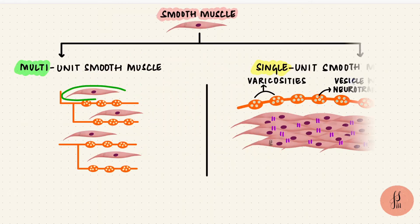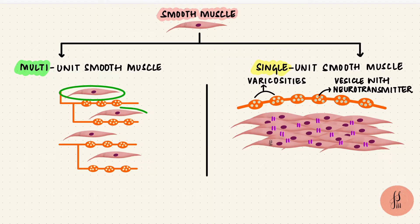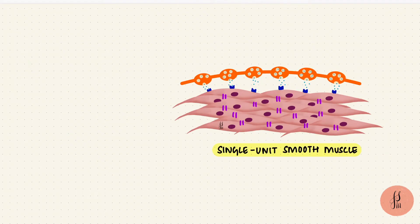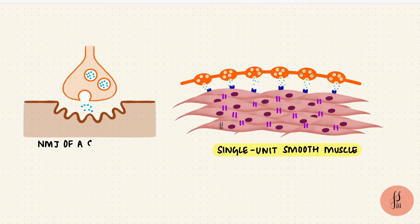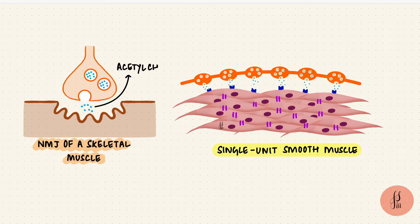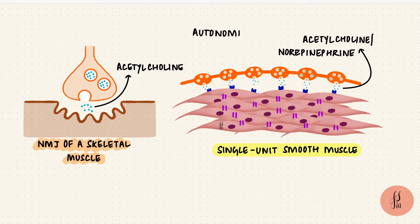This is versus multi-unit smooth muscles, where the cells have few to no gap junctions, so the cells contract more independently. It's not as well structured as the neuromuscular junction of skeletal muscles. Also, in skeletal muscles the neurotransmitter was acetylcholine, while here it could be acetylcholine or norepinephrine, etc., because remember that these are autonomic nerves.